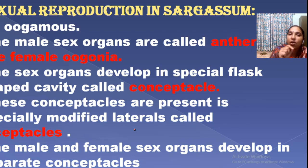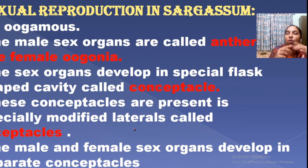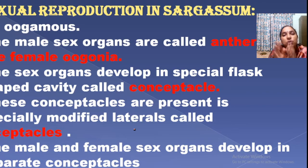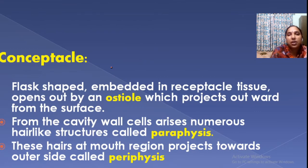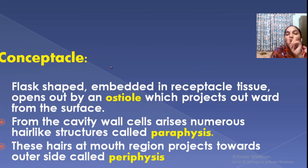Receptacles bear conceptacles. Conceptacles are of two types: male conceptacles produce antheridia, and female conceptacles produce oogonia. Now, the conceptacle structure — it is a flask-shaped structure having an opening known as the ostiole.